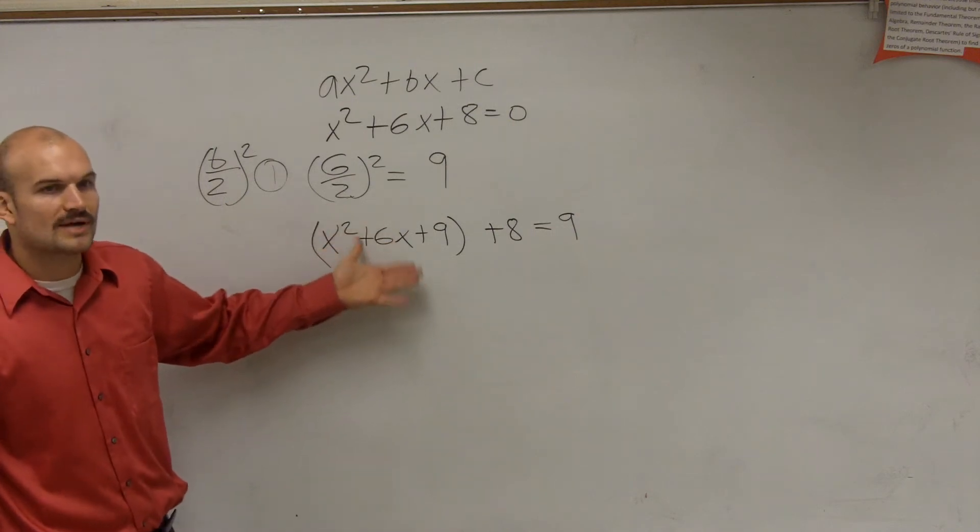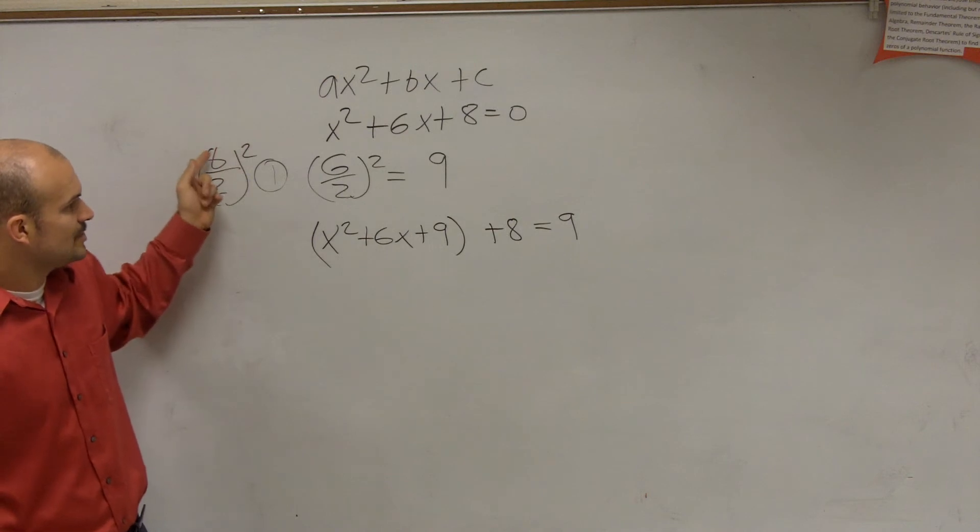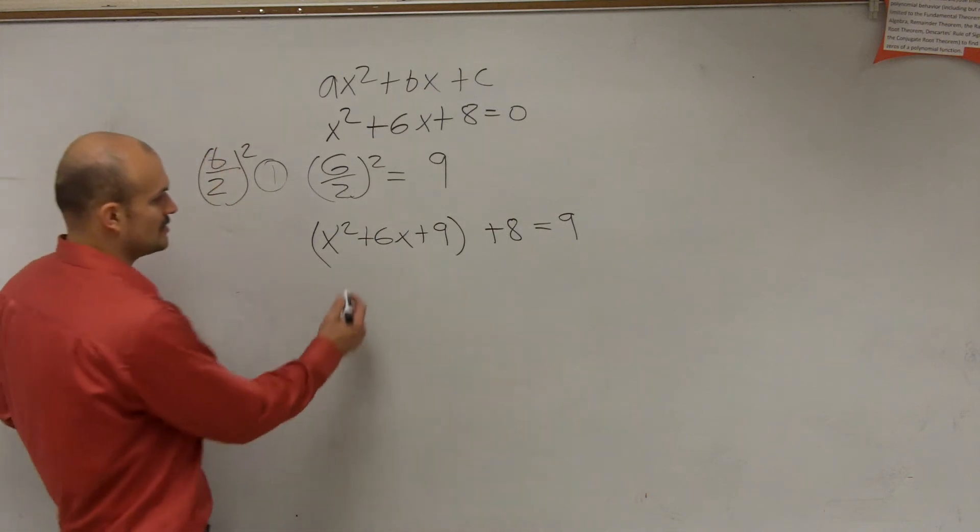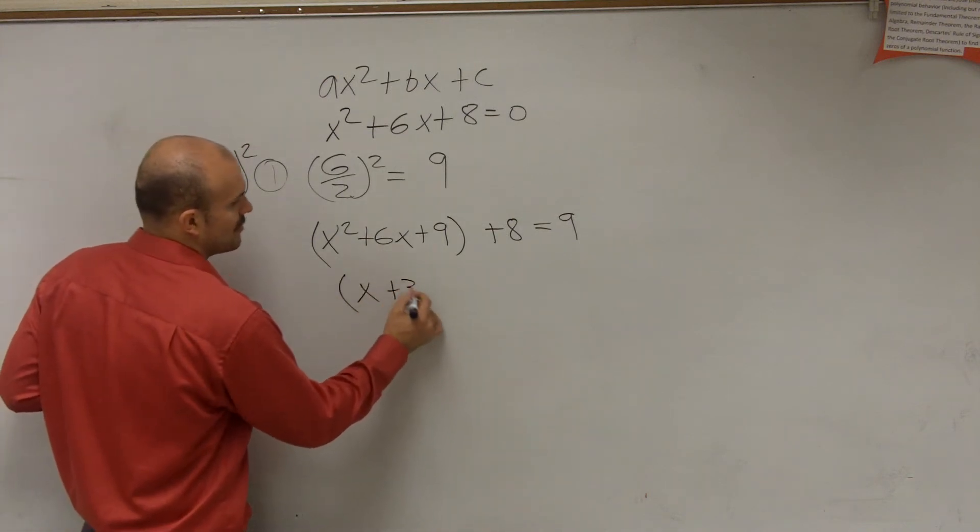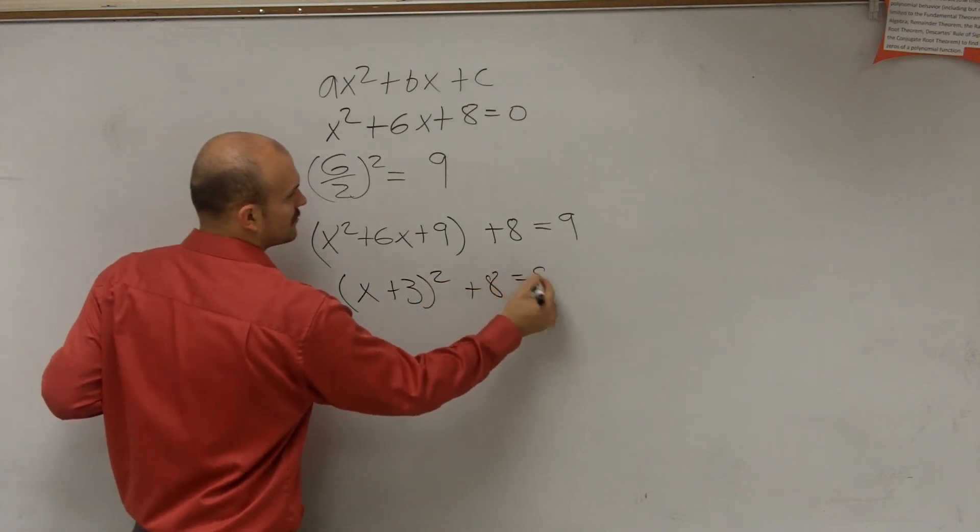Well, you can do kind of a trick, is to take b divided by 2. So 6 divided by 2 is 3. So therefore, you can have x plus 3 squared plus 8 equals 9.